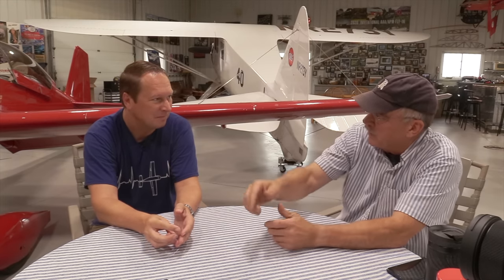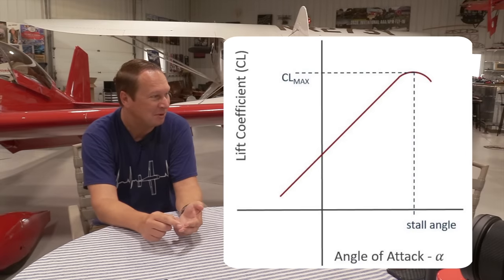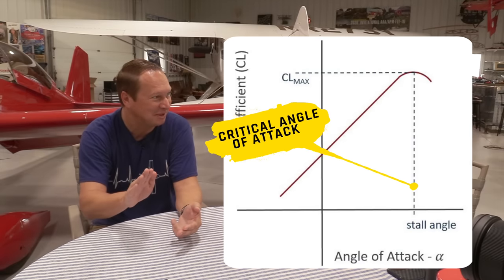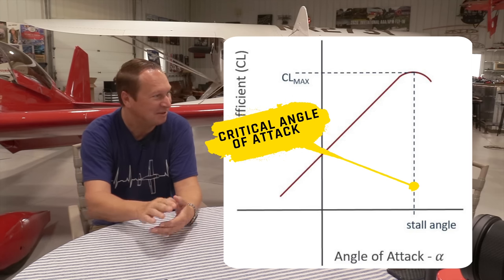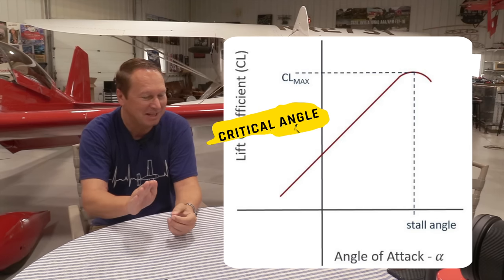Any change in the vector of the airplane is going to require load factor in some axis. To get that load factor, I need to create more lift - and that more lift can come from an increased angle of attack or from higher speed. If I'm at the critical angle of attack, I can't get any more lift and cannot increase my load factor anymore. The only way to get more load factor then is through more airspeed.